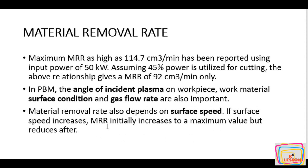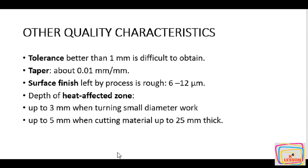Other quality characteristics: tolerance better than 1 mm is difficult to obtain. A taper of about 0.01 mm per mm can be obtained. The surface finish left by the process is 6 to 12 microns. Depth of the heat-affected zone is up to 3 mm when turning small-diameter work, and up to 5 mm when cutting material up to 25 mm thickness.